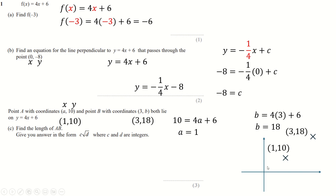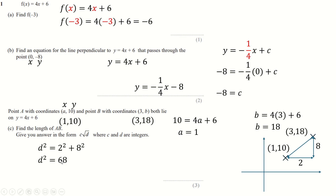It doesn't have to be in any way accurate. I'm just saying (1, 10) is somewhere here, and (3, 18) is further to the right and further up. Now it says find the distance between these two points — find the length between them. How far does it go across and how far does it go up? It goes 2 across (from 1 to 3) and 8 up, so we just do Pythagoras: 2 squared plus 8 squared, square rooted. That's 68, and 68 is 4 times 17, so root 4 times root 17 — root 4 is 2, so this is just 2 root 17.